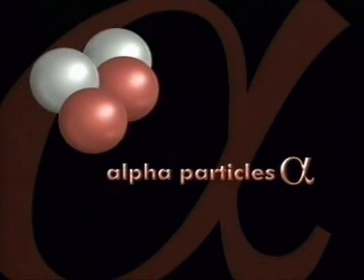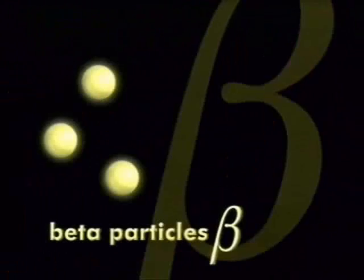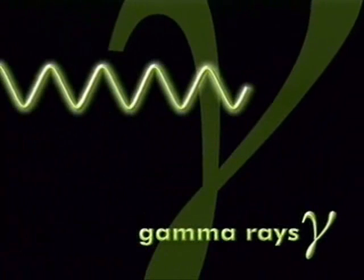Alpha particles consist of two protons and two neutrons. Beta particles are fast-moving electrons, while gamma rays are electromagnetic radiation, similar to X-rays.